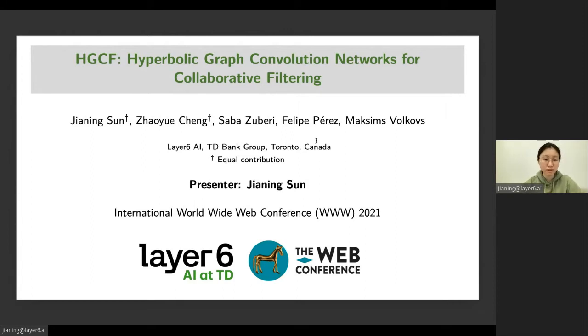At a high level, in this paper we propose a collaborative filtering model to learn low-dimensional user and item representations on hyperbolic space, and also capture the high-order information of user-item relationships by aggregating from usual Euclidean space with GCN layers. This is a joint work with my colleagues Joey, Saba, Philippe, and Max.